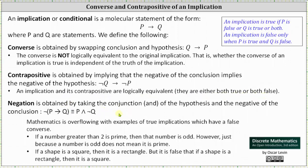This lesson won't focus on negation, but the negation of an implication is obtained by taking the conjunction, meaning and, of the hypothesis and the negation of the conclusion. The negation of if P then Q is equivalent to P and not Q.